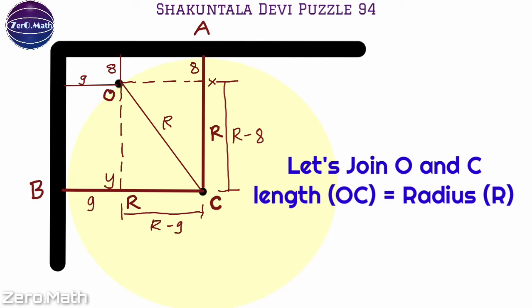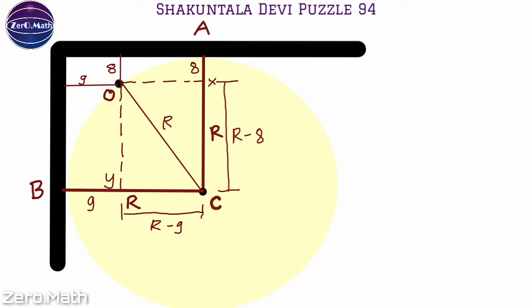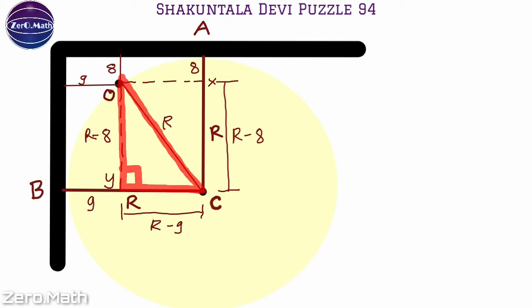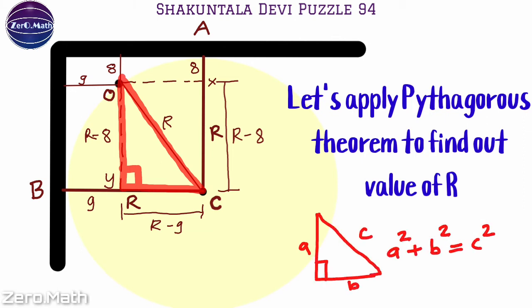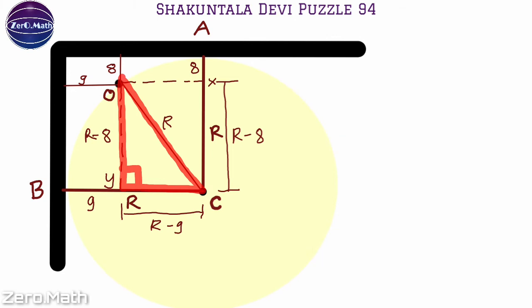The distance between point O and Y will be r minus eight inches, because the length of XC is r minus eight inches, and we know that the length of YC is r minus nine inches. The triangle OYC formed here is a right-angle triangle, so we can apply the Pythagorean theorem to find the value of r. As per the theorem, the square of the hypotenuse equals the sum of the squares of the other two sides, giving us: (r − 9)² + (r − 8)² = r².